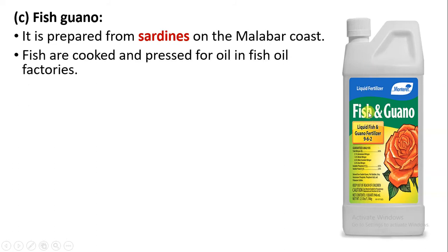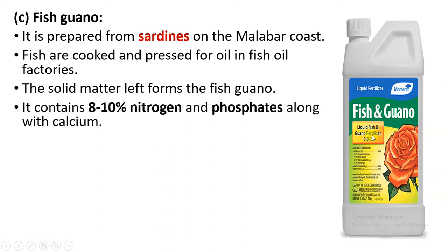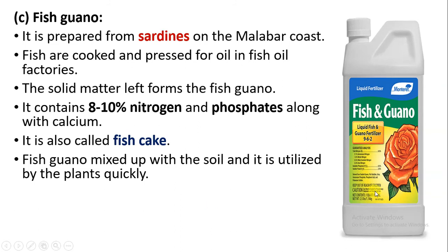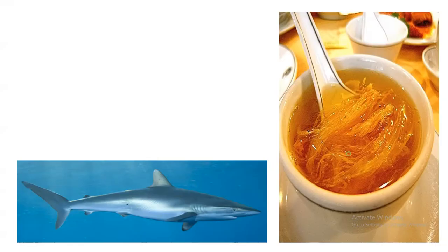For fish guano, the fishes are cooked and pressed so that the oil is removed in fish oil factories. The solid matter remaining after oil extraction is the fish guano, which contains about 8 to 10 percent nitrogen, phosphate, and calcium. It is also called fish cake. Fish guano is mixed with soil, enhancing the nutrient content of the soil so that plants grow quickly. Fish manure is known as fertilizer as it contains protein, nitrogen, calcium, and phosphorus.